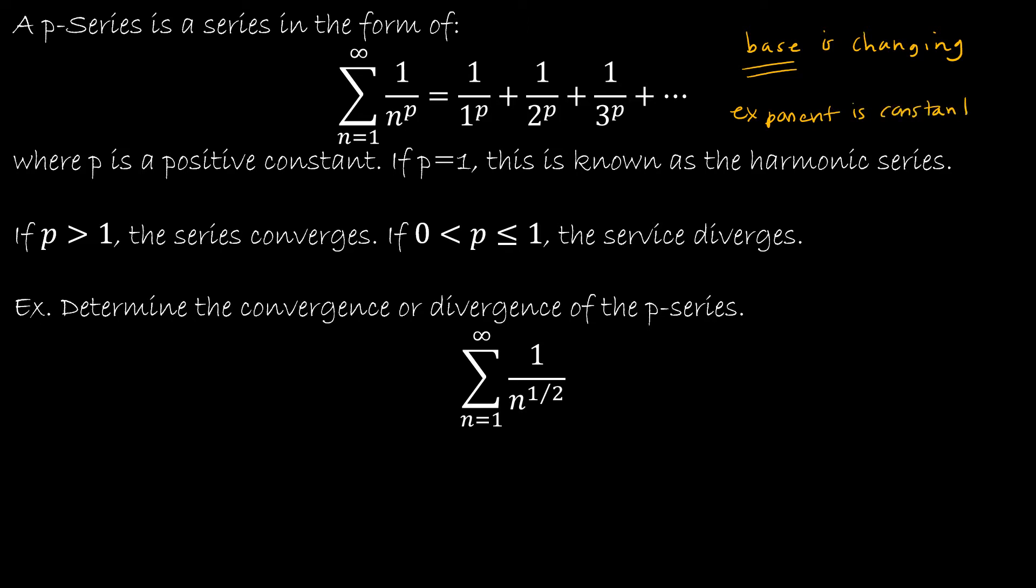The exponent is constant, the exponent is remaining the same. This p-series test says if we know that p is greater than 1, the series will converge. And if 0 is less than p is less than or equal to 1, or p is between 0 and 1 with the 1 being inclusive, then the series diverges.